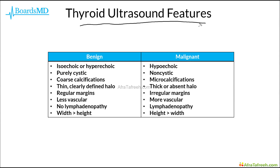We use ultrasound findings to help determine whether a thyroid lesion is likely benign or malignant. In the case of benign thyroid nodules, these tend to be isoechoic or hyperechoic, often purely cystic lesions. If calcifications are present, these tend to be coarse calcifications. Purely cystic benign nodules will classically have a thin, clearly defined halo, regular margins, are less likely to be vascular, will have no lymphadenopathy, and classically the width of benign thyroid nodules will be greater than their height.